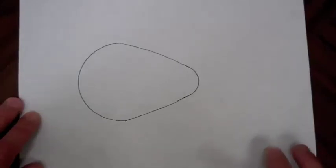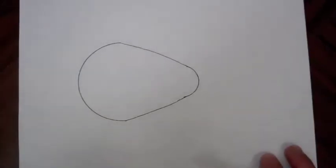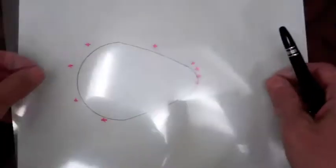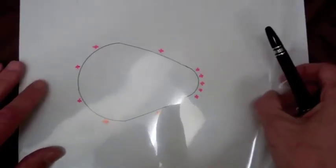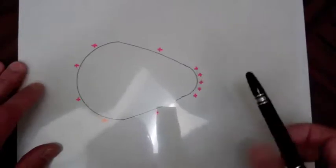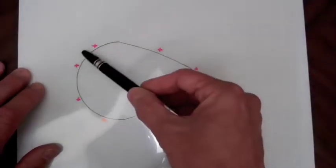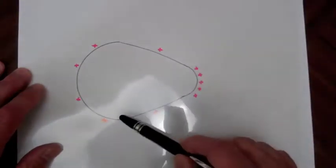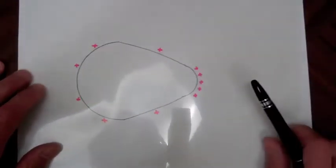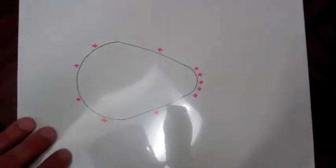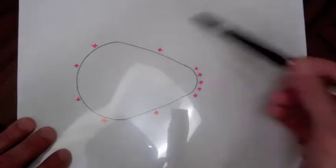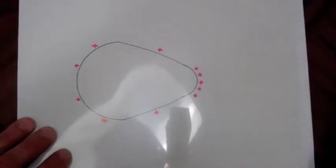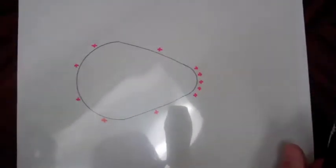If we put some charge on the object it will redistribute until it is at an equipotential. From the experiments we just did, the charge density would be greatest where we have the greatest curvature, then a little less where we have slower curvature, and finally the least amount on the sides. The electric flux density lines will come out normal to the surface because this object is an equipotential.